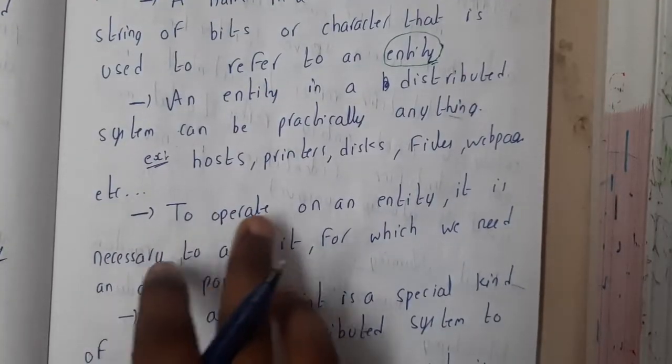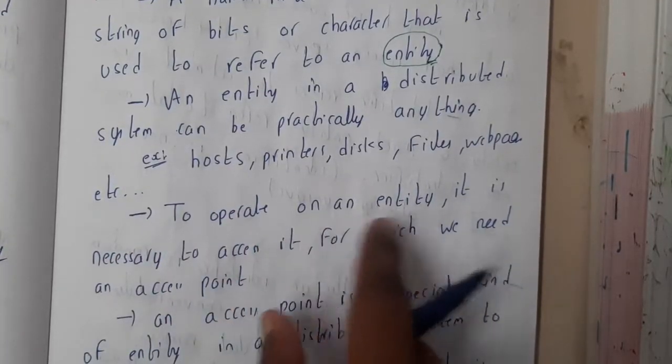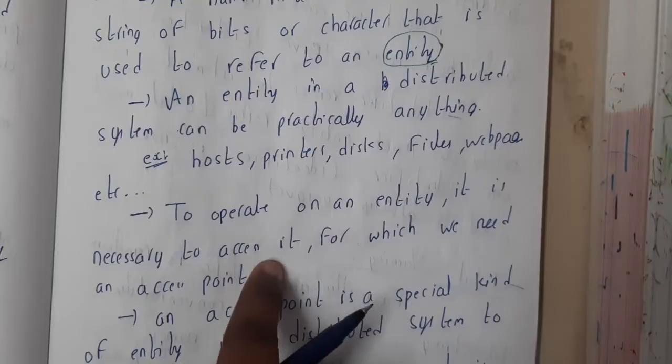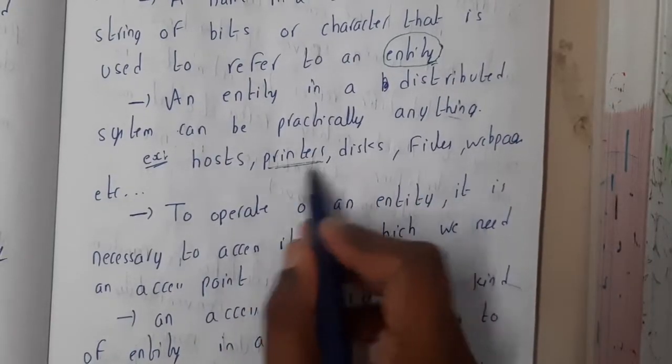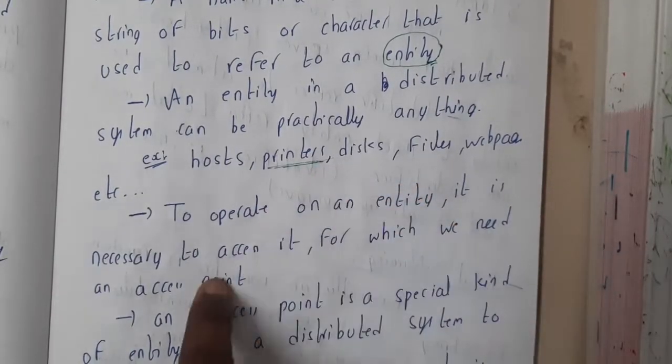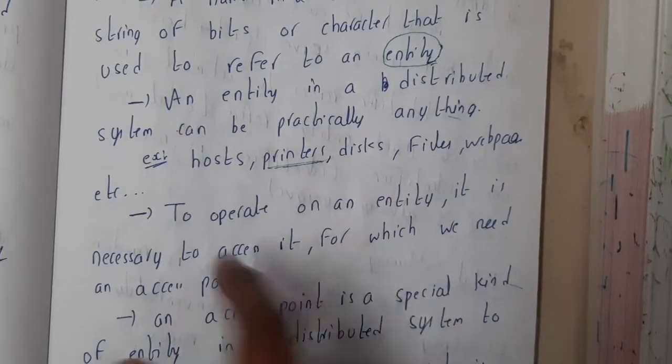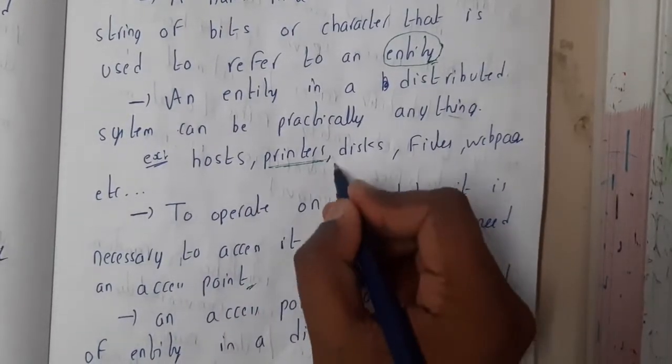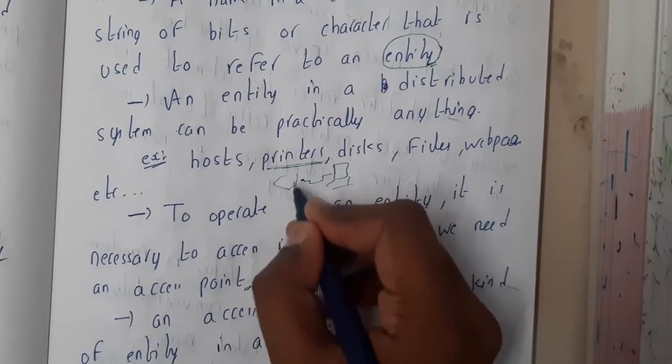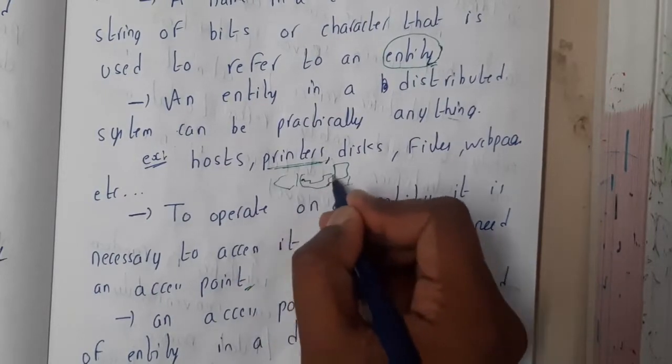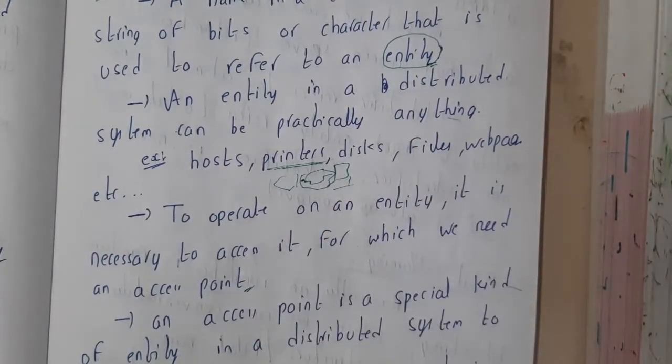Okay. So to operate on an entity, it is necessary to access it. So basically, if you want to use a printer, you should access it first of all. So for that access, we need an access point. Yes. So if this is a printer, you need a wire to connect it to your laptop or to your system. So this wire you can say is an access point, so that through that you are connecting it.